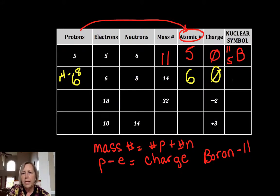To do my nuclear symbol, I put my mass number in the upper left, that's 14. My atomic number in the lower left, that's 6. Look up at my periodic table: element 6 is carbon.